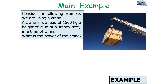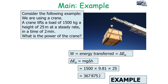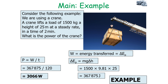Consider a crane that lifts a load of 1,500 kilograms to a height of 25 metres at a steady rate in a time of two minutes. What is the power of the crane? First, calculate the energy transferred as gravitational potential energy: 1,500 times 9.81 times 25 equals 367,875 joules. Then power equals work done over time: 367,875 divided by 120 equals 3,066 watts.